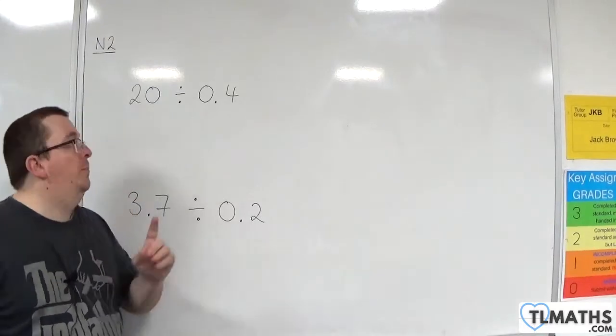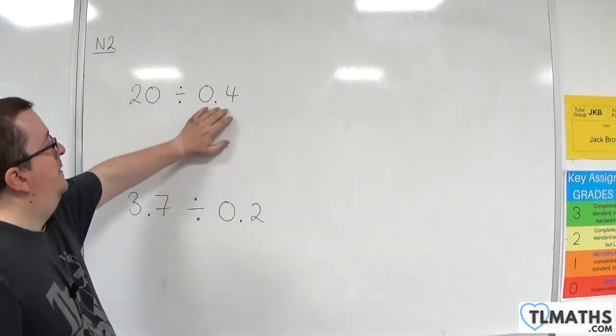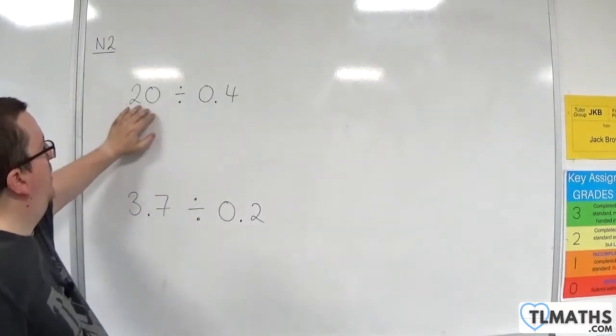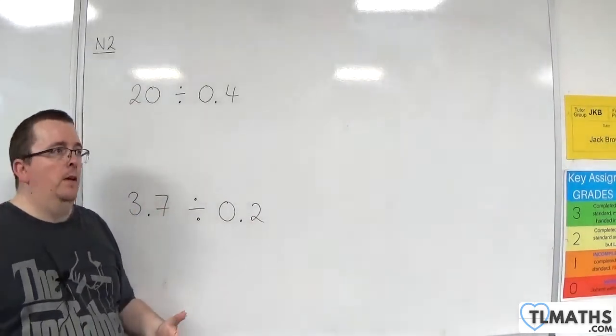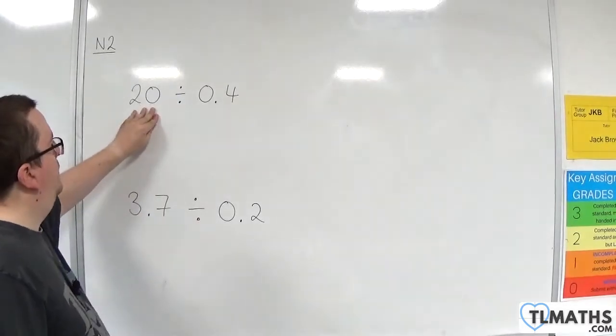However, if you multiply this by 10, you must also multiply this by 10. Because essentially, remember, this is a fraction. This is the numerator, this is the denominator.